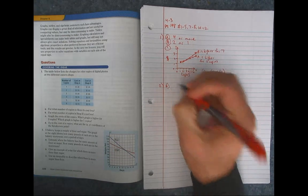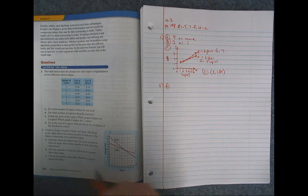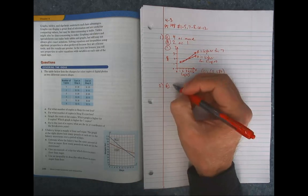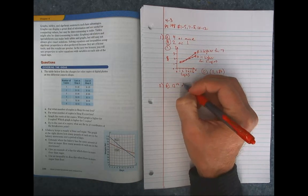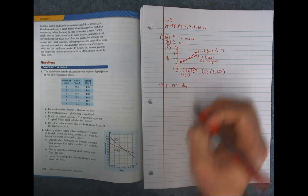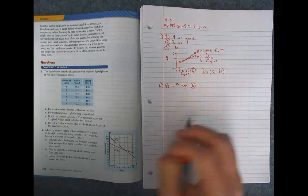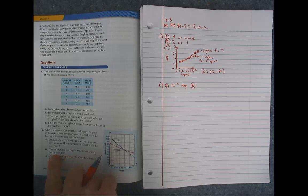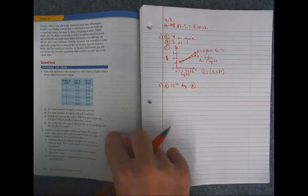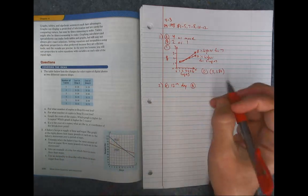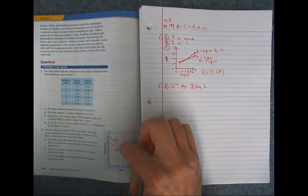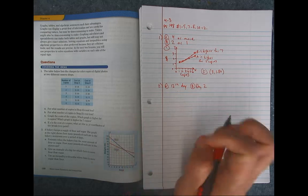So letter A, estimate when the bakery has the same amount of flour and sugar. So it looks like they cross right here. And so that would be the 12th day. Letter B, give an example of a day for which there is more flour than sugar. So any of these days up here, you can give an example. So I'm going to say day 2. As long as you say something that's less than 12, you're good.